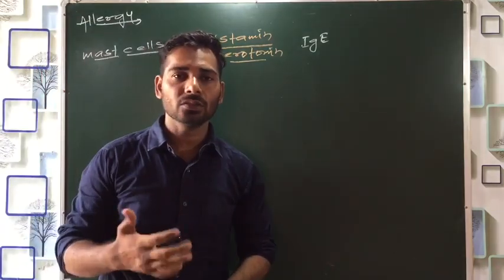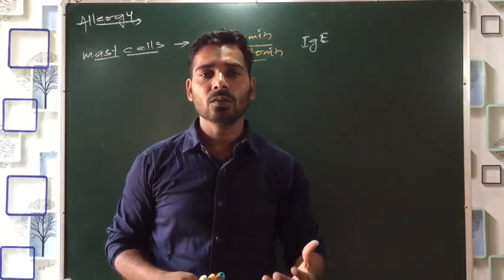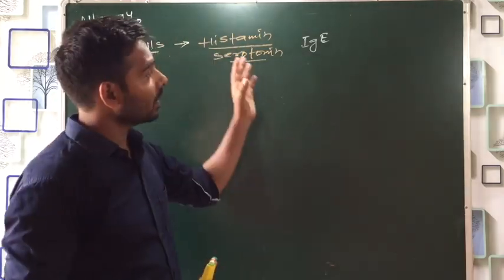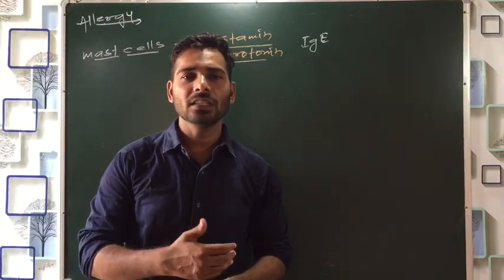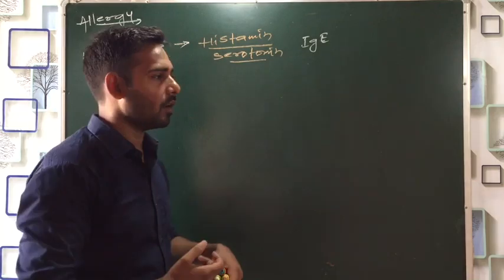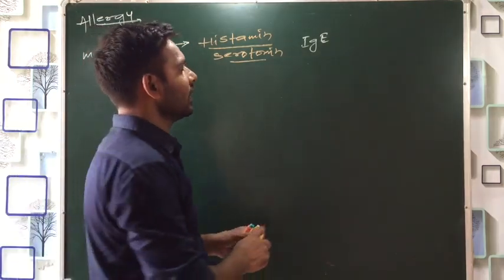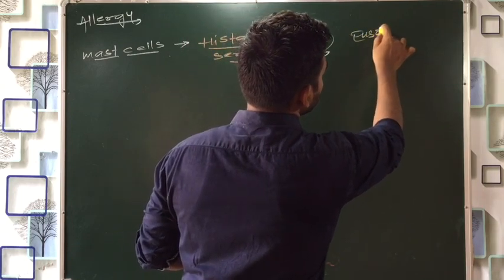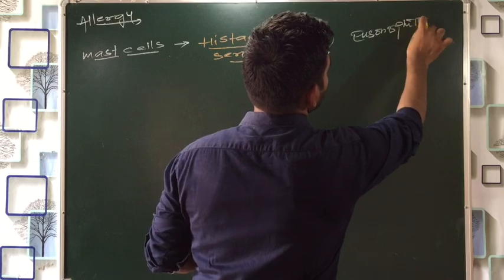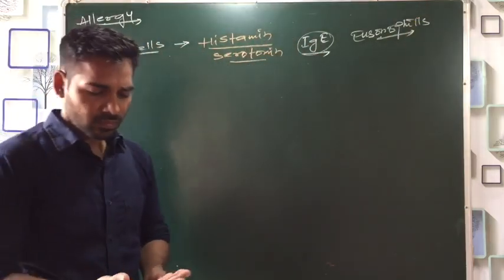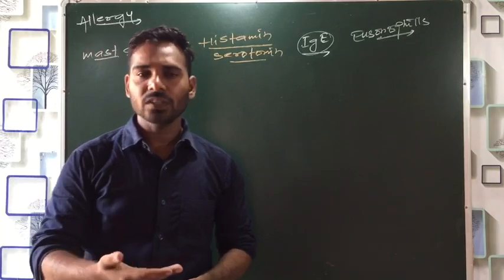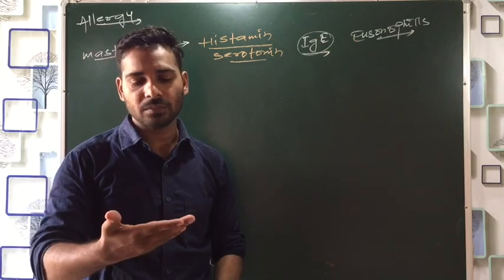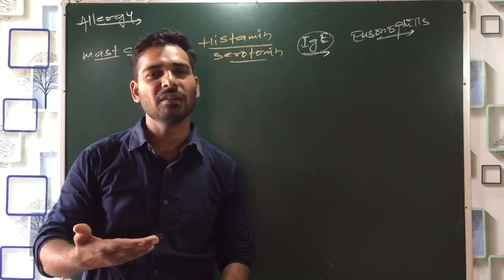If someone has a strong allergy, then the doctors suggest that you go to a good pathology center and test your blood. Then you will know if there is an allergy or not. They check the blood samples and count the IgE level. The IgE level and the eosinophils should be increased. So they have seen the IgE and eosinophil levels, and they realize that you have an allergy.